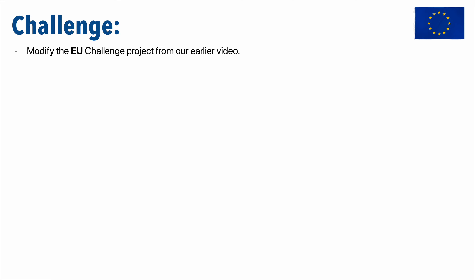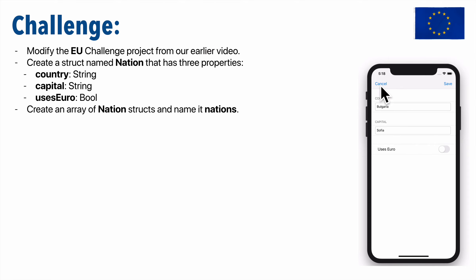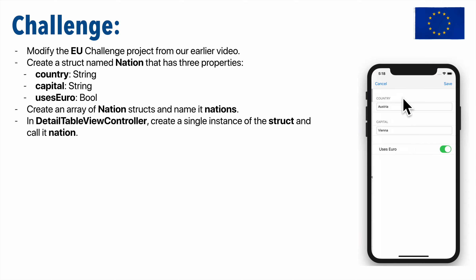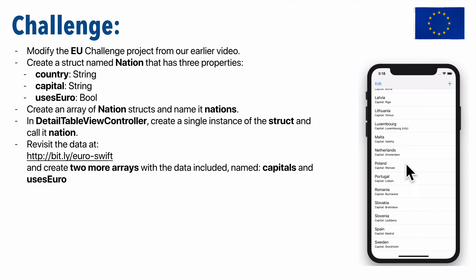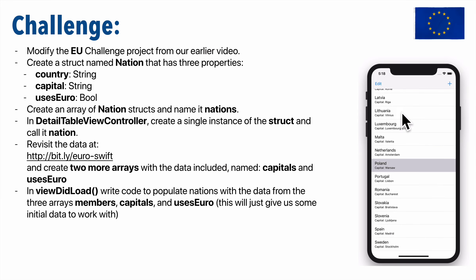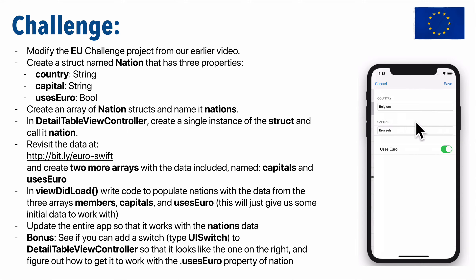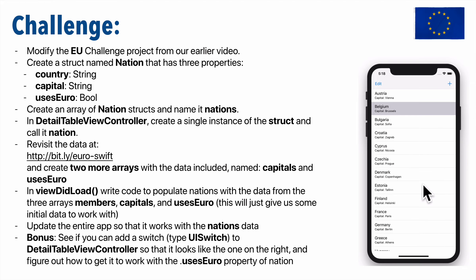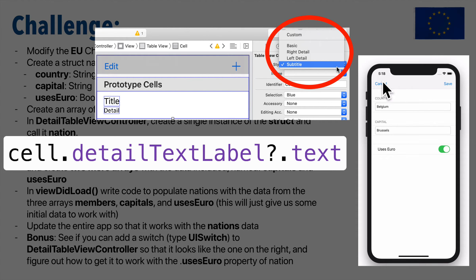It's challenge time! Modify the EU challenge project from earlier videos. Create a structure called Nation with three properties: country (String), capital (String), and usesEuro (Bool). Create an array of Nation structs named nations. In DetailTableViewController, create a single instance of the struct called nation. Revisit the data at the bit.ly link and create two more arrays named capitals and usesEuro. Then modify viewDidLoad so that the three arrays — members, capitals, and usesEuro — are read into the nations array of structs. Also try adding a UISwitch for the usesEuro property.